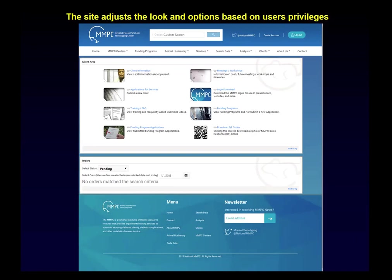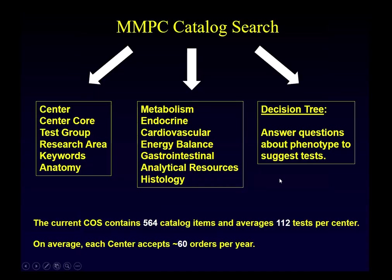Because the MMPC is a fee-for-service organization, the main thing we deal with is the catalog. Experienced clients can go straight to the center or core and order right away. If you're not sure what you're looking for, we provide a way to look based on research areas of interest. For those with many questions, we built a decision tree interface where questions are posed about your mouse model phenotype and we make suggestions on the types of tests that might be useful.